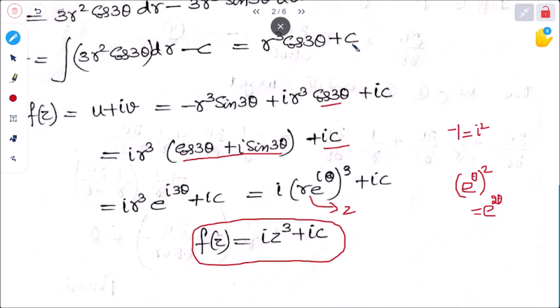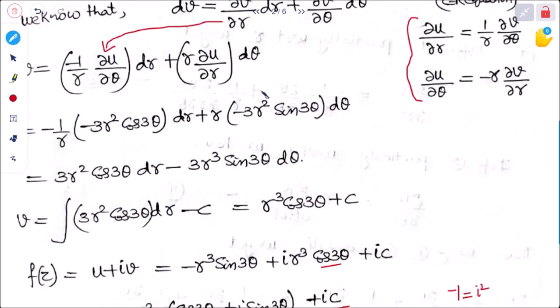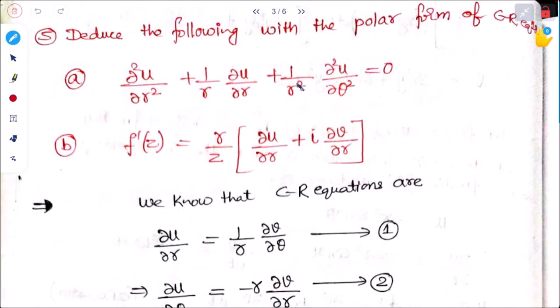This is the polar form — it is a different type of question. Next: deduce from the polar form of the Cauchy-Riemann equations that ∂²u/∂r² + (1/r)(∂u/∂r) + (1/r²)(∂²u/∂θ²) = 0, and also that f'(z) = (r/z)(∂u/∂r + i∂v/∂r).